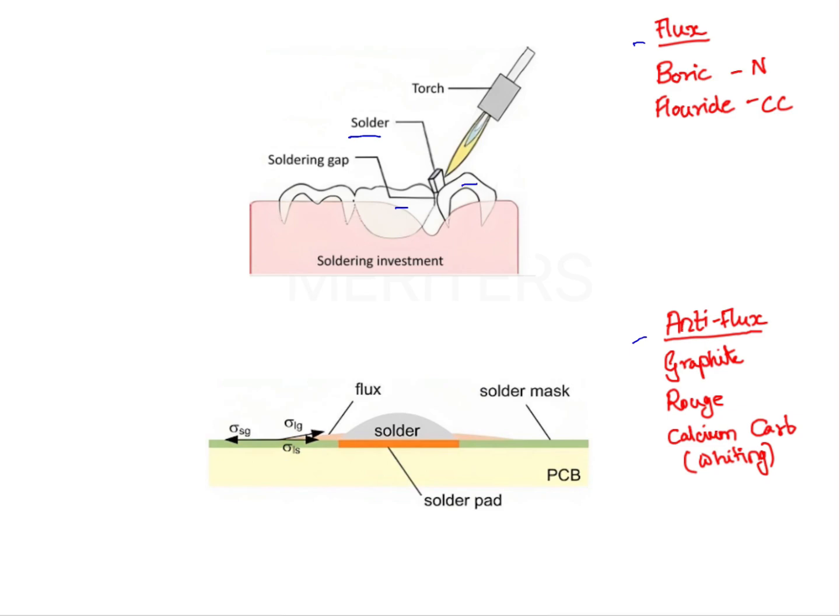What does the flux do? Flux basically helps you to dissolve or entrap the oxygen present on your parent material. So whatever oxygen is present in this area where you want your solder to flow, you will apply flux in that area. Whatever oxygen contamination is there, the flux will dissolve that.